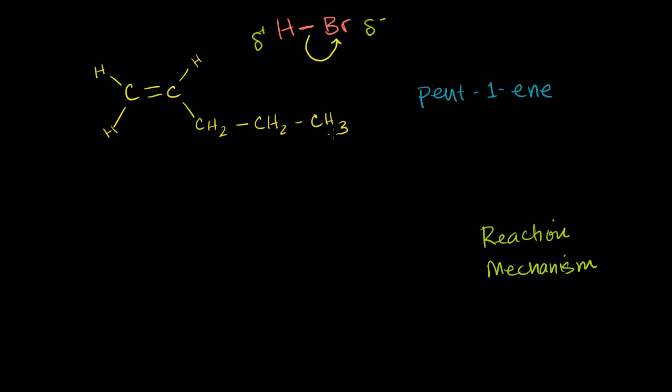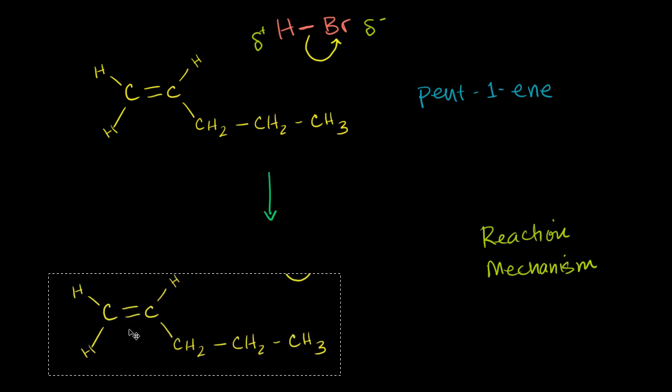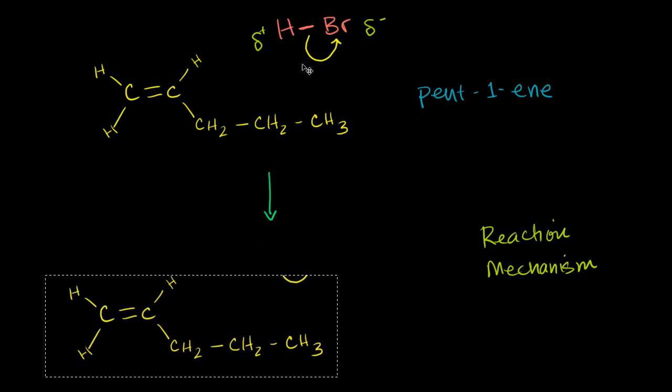Now, if that happens, what will this whole setup look like? Well, if that happens, this whole setup will move down a little bit. We still have our pent-1-ene. But now, in the hydrogen bromide, the bond, you could view it as having broken up because the bromine, which is now a bromide anion, will have taken the electrons. This is what that is showing.